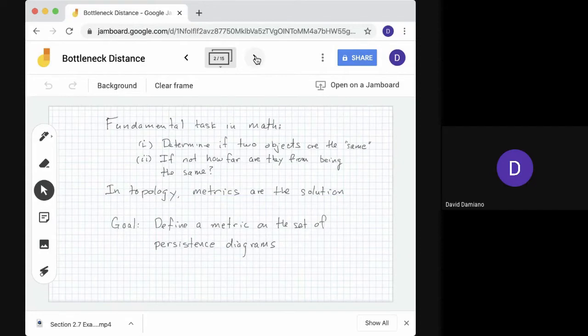In mathematics, a fundamental task is to determine if two objects are the same. Same might mean they're equivalent, it might mean they're equal, it depends on the context. If they're not the same, the question is how far are they from being the same?